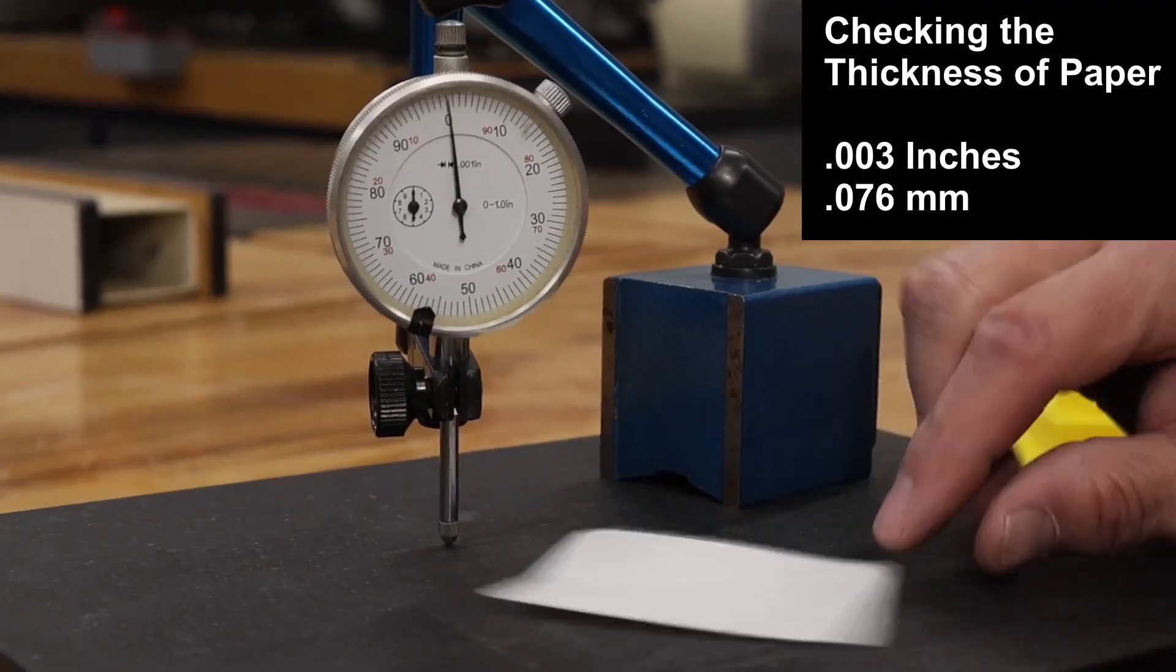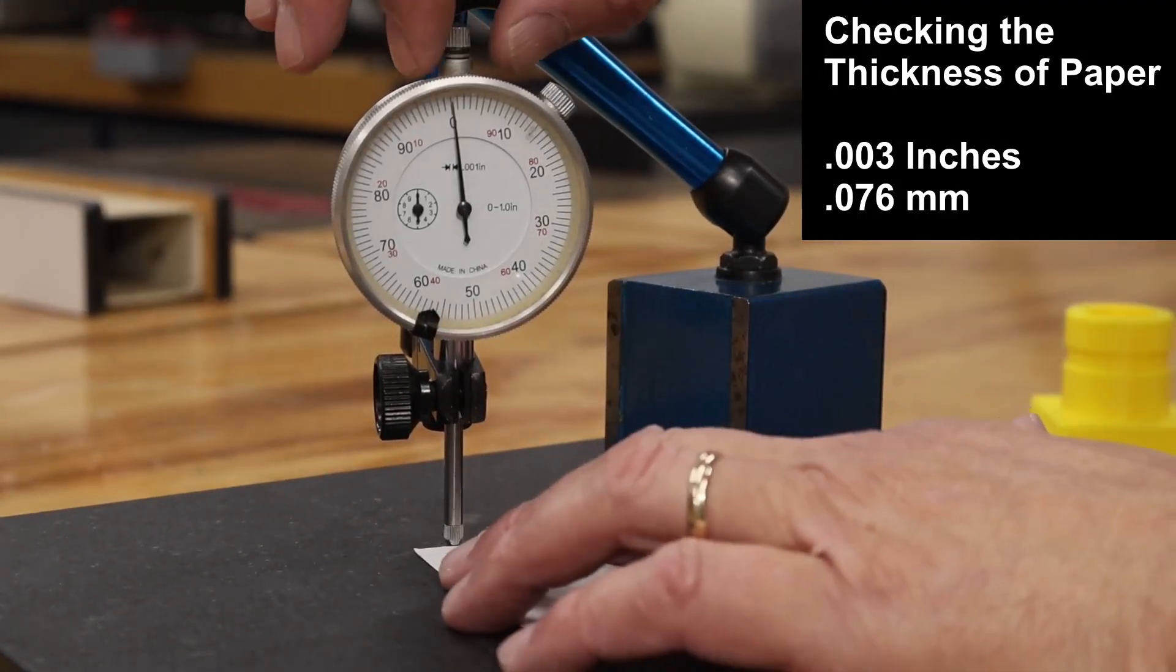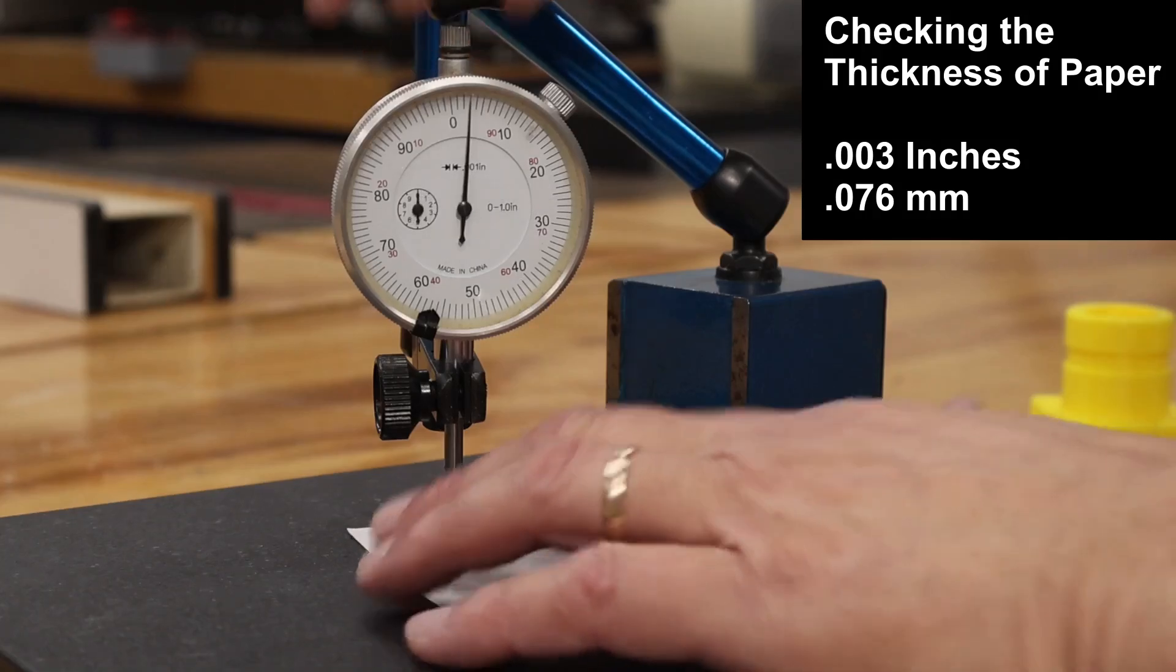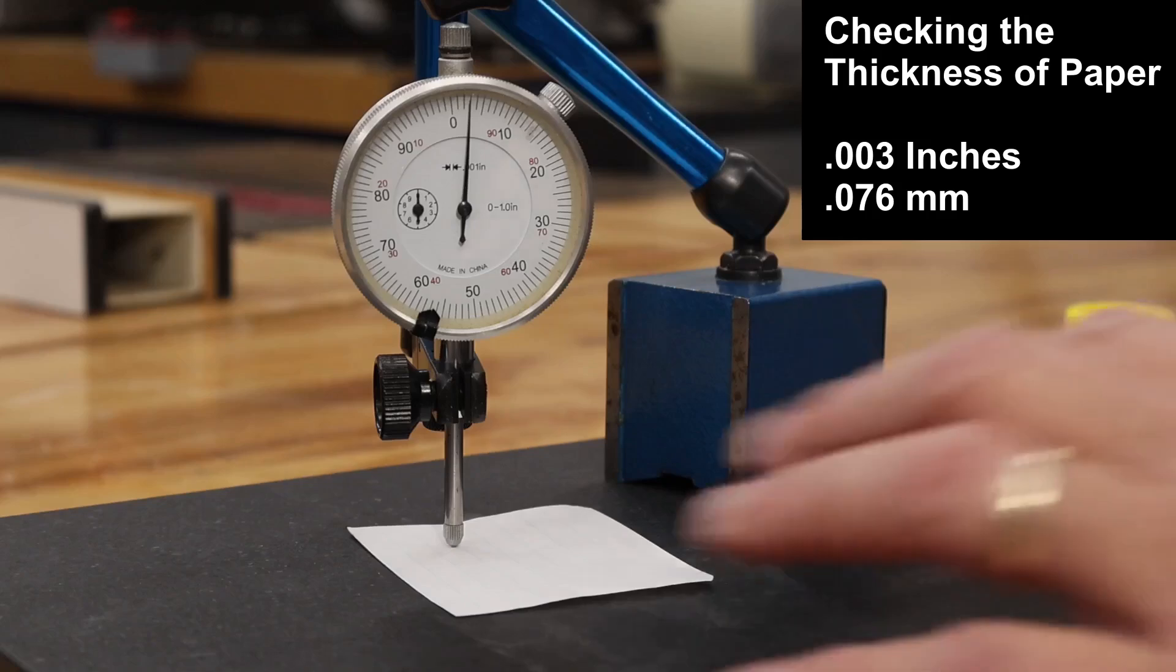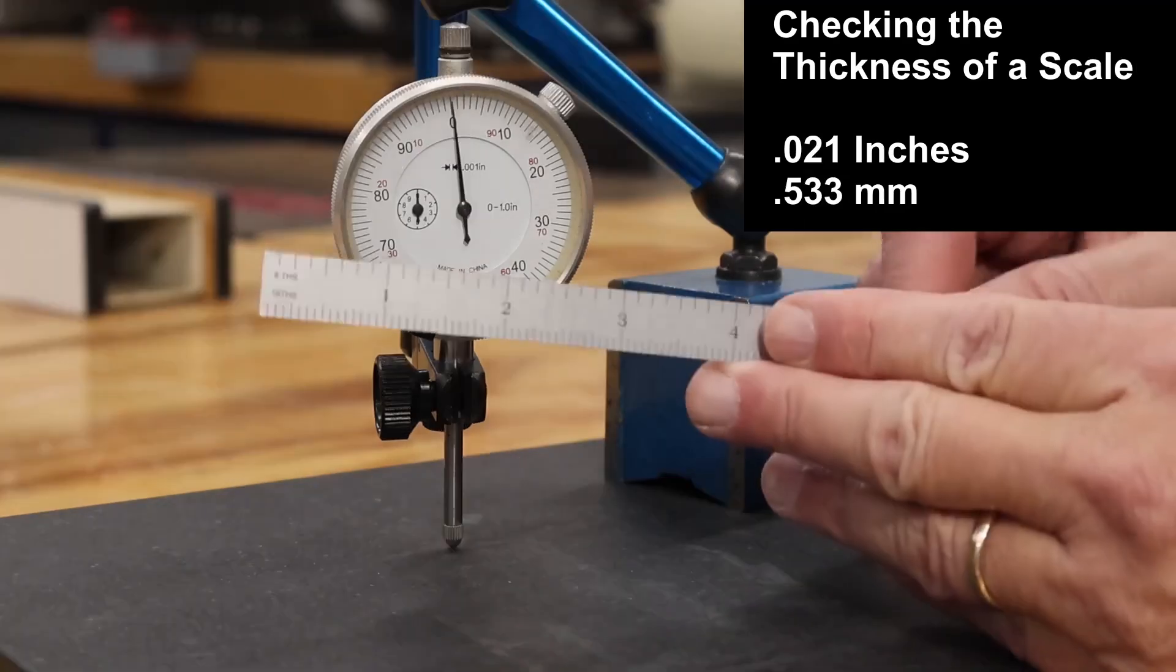Here are a few examples of measuring different objects and different ways of measuring. This is measuring the thickness of a piece of paper. You'll notice that it's showing that paper is 0.003 inches thick. Pretty common for normal paper.